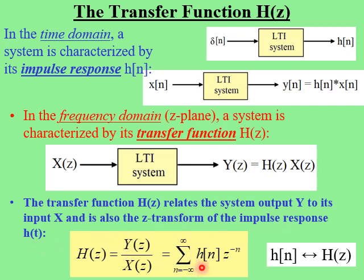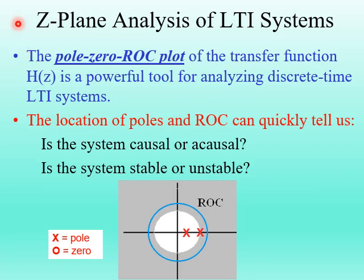Here we see the definition of the z-transform for H of n, which gives us H of z. So in the time domain we have the impulse response H of n, and in the frequency domain we have the transfer function H of z. The pole-zero ROC plot for the transfer function H of z is a powerful tool for analyzing discrete-time LTI systems.